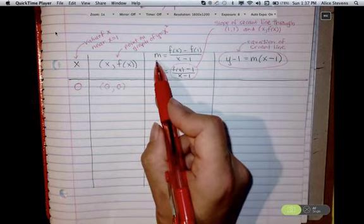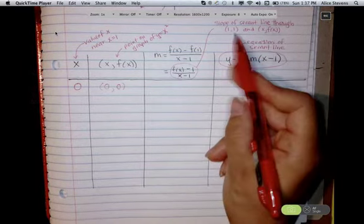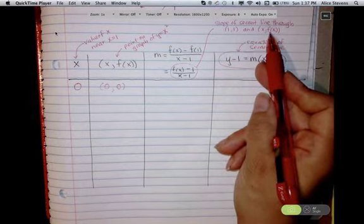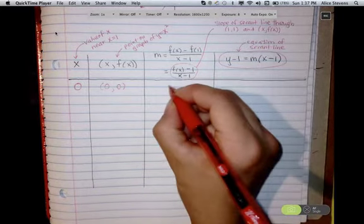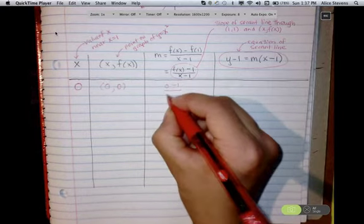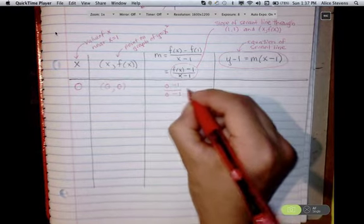Now, the slope of the secant line through the point 1, 1, and 0, 0 is just going to be equal to 0 minus 1 over 0 minus 1, so that's just 1.